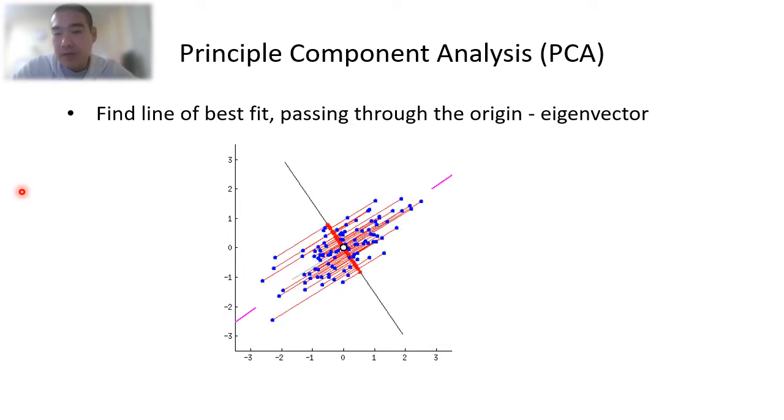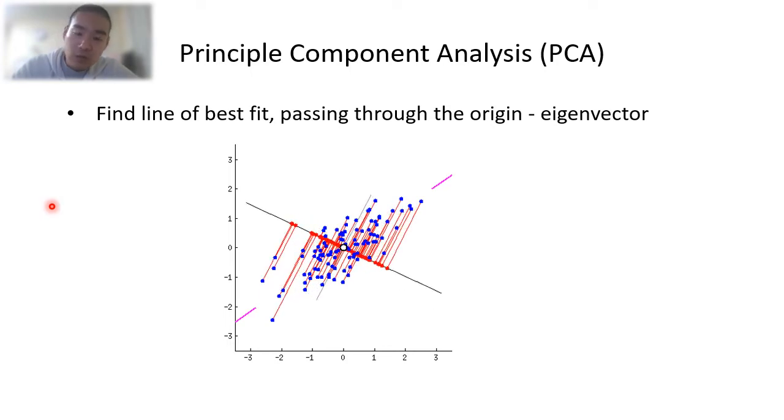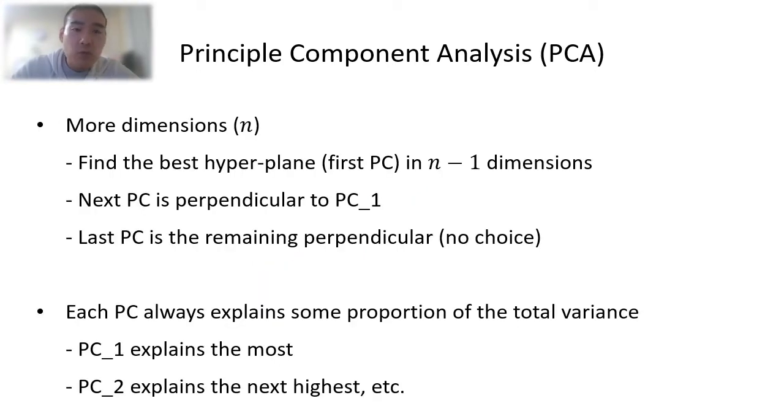The second Principal Component is calculated in the same way, with two conditions. One, it is uncorrelated with the first Principal Component. And two, it accounts for the next highest variance. So here is the line which is perpendicular to the first Principal Component. And we don't have a choice for this one, which is this line here. And when it comes to more dimensions, we use a similar strategy. First, we find the first Principal Component, which will be a hyperplane in this case, because it's more than three dimensions. We then find the next Principal Component, which is perpendicular to the first one. The third Principal Component will be perpendicular to both the first and the second ones, and so on. The last Principal Component is always the remaining perpendicular.